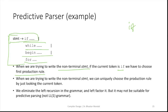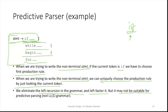When we are trying to write the non-terminal statement, we can uniquely choose the production rule by just looking at the current token. If the current token is 'if', we can simply look at this and choose the correct grammar production rule. We eliminate the left recursion of the grammar and left-factor it, but it may not be suitable for predictive parsing on its own grammar.